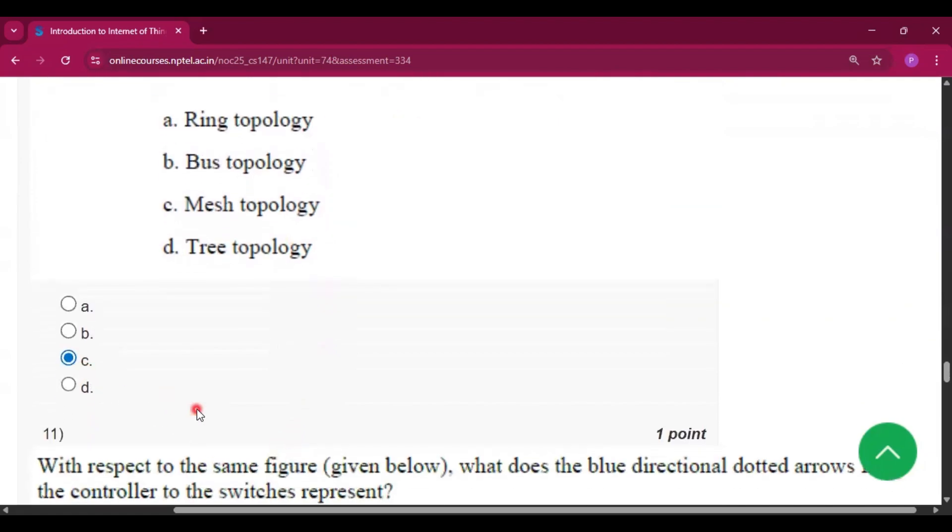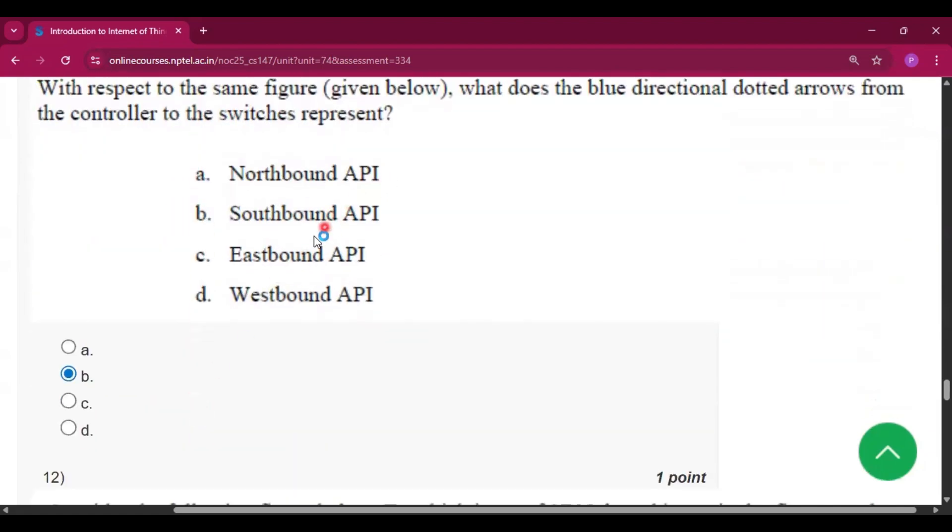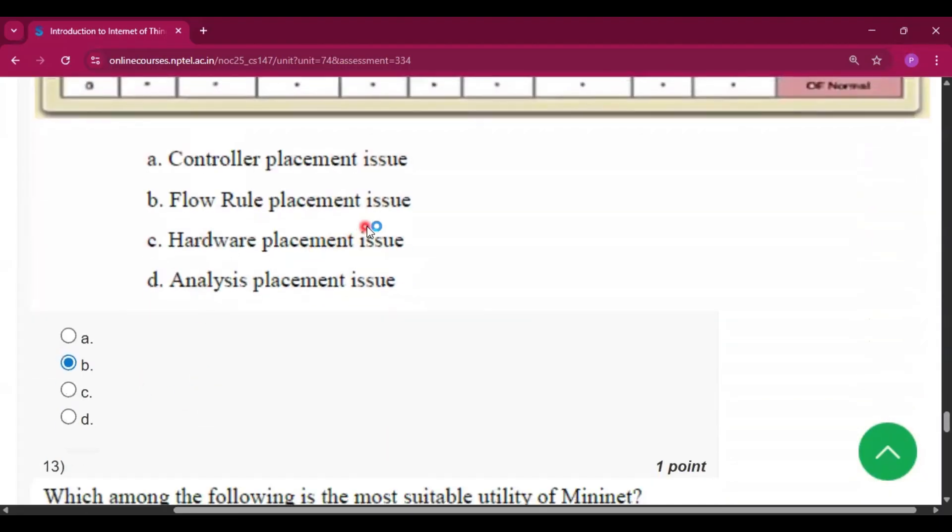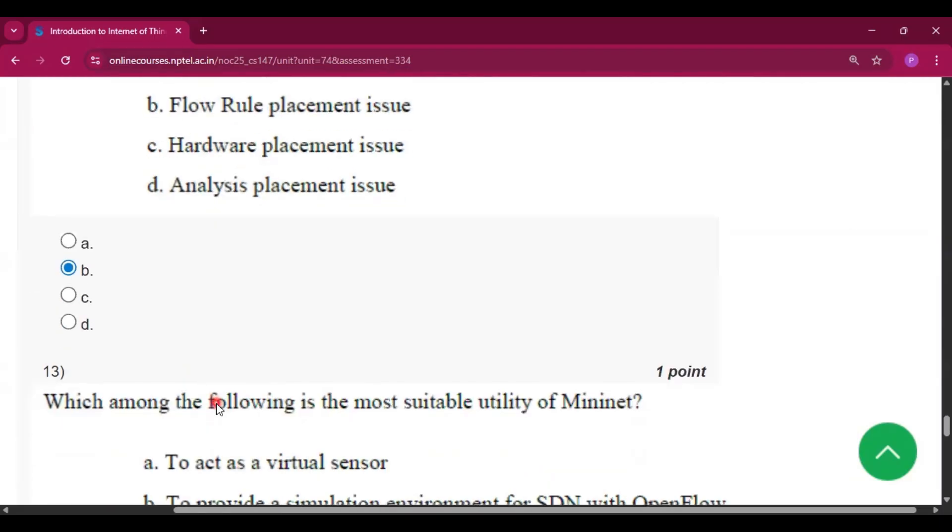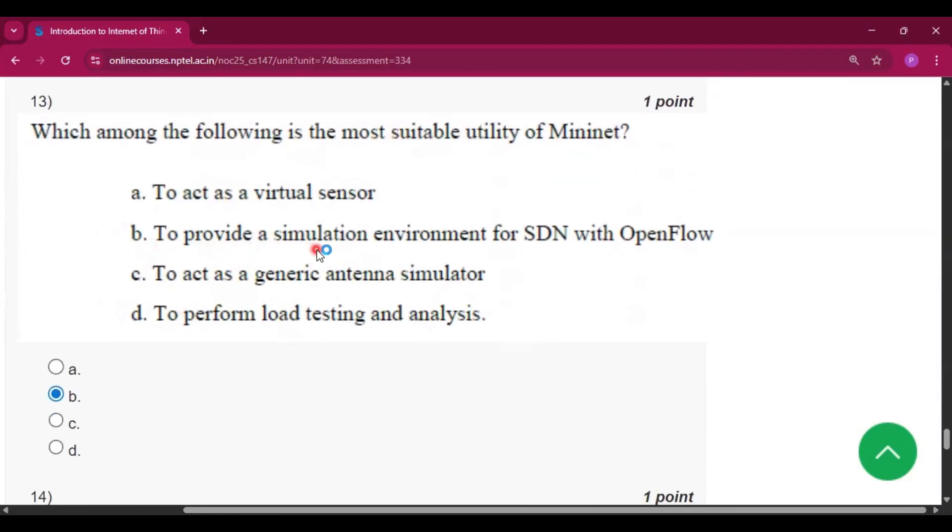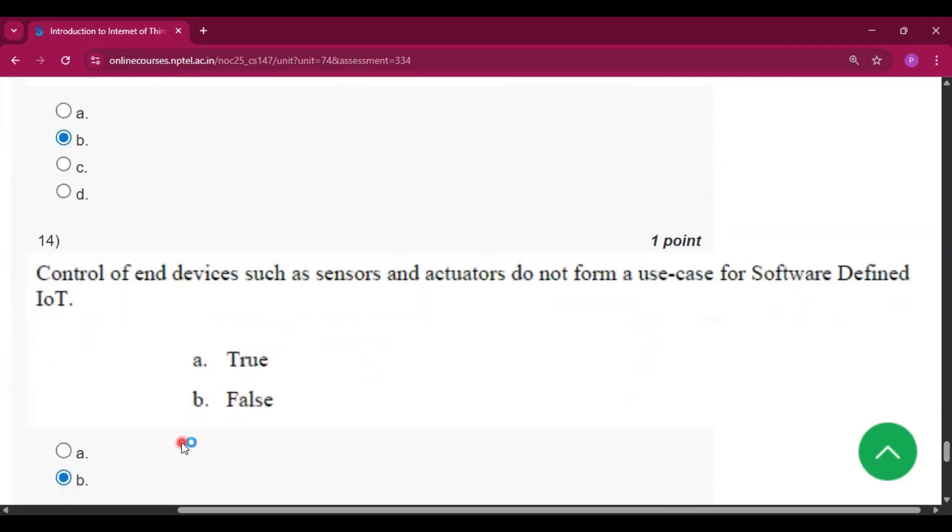Now question number 11, the answer will be southbound API, that is option B. Now question number 12, the answer will be flow rule placement issue, that is option B. Now question number 13, the answer will be option B, to provide a simulations environment for SDN with OpenFlow.